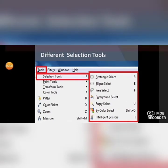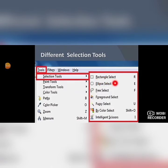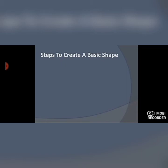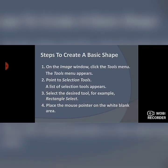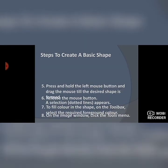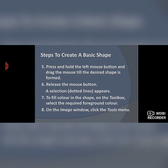In the next slide we will see the steps to create a basic shape. On the Image Window, click the Tools menu, the Tools menu appears, point to Selection Tools, a list of selection tools appears. Select the desired tool — for example, Rectangle Select. Place the mouse pointer on the white blank area, then press and hold the left mouse button and drag the mouse until the desired shape is formed.